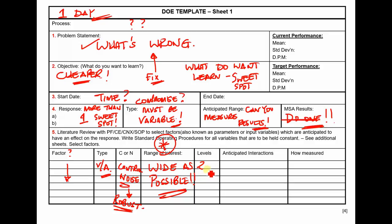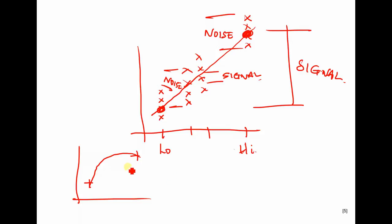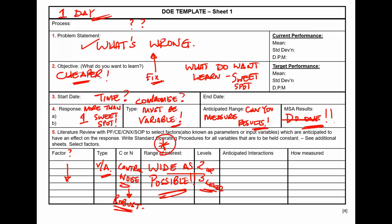Then: are you at two level or three level? With two level you test at high and low, assuming a straight-line relationship. But what if the relationship is curved? Two points aren't enough to detect a curve. For a curved relationship, you need a three-level test. So the question is: do you think the relationship is linear or curved?